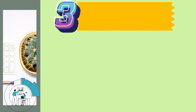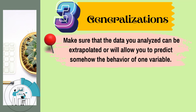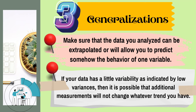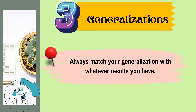The third part in our discussion is generalizations. Be on guard in writing your generalizations. Make sure that the data you analyzed can be extrapolated, or will allow you to predict somehow the behavior of one variable. If your data has a low variability as indicated by low variances, then it is possible that additional measurements will not change whatever trend you have. Always match your generalization with whatever results you have, and do not generalize when you have very few samples — don't say 50% when you actually have only 2, 3, or even 4 samples.